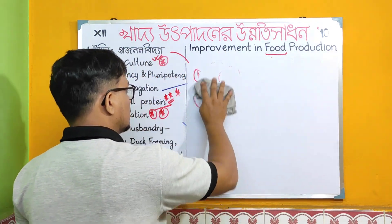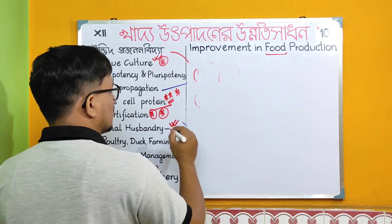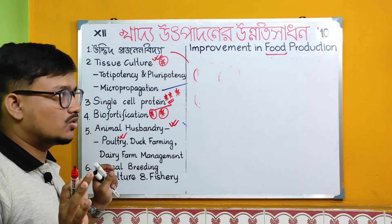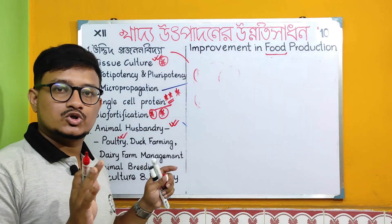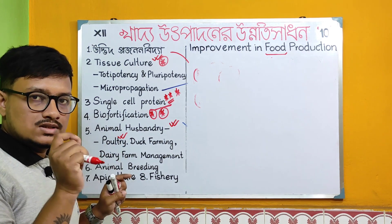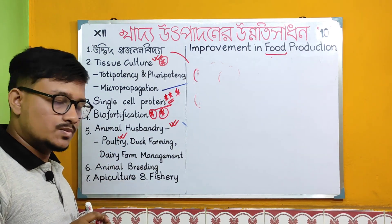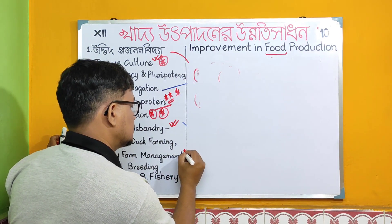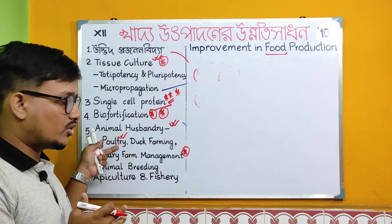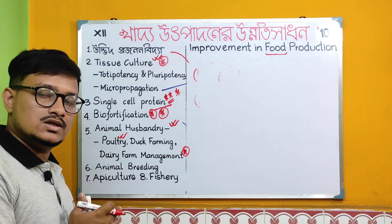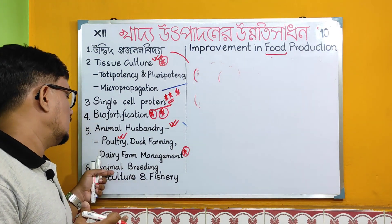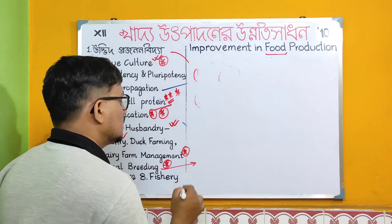Next is animal husbandry — covering different types of quality examples. This portion is important for board exams — the chapter covers about 14 marks. Topics include dairy farming, duck farming, disease management, and farm management. Dairy farming examples include different types, sterilization, and pasteurization. Animal breeding is also important.